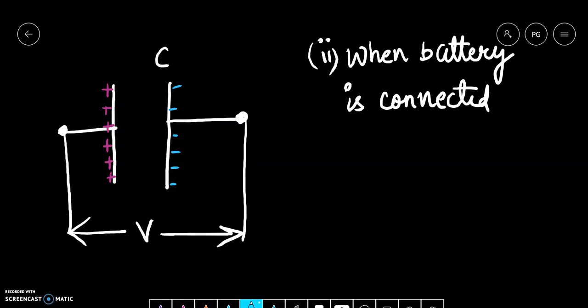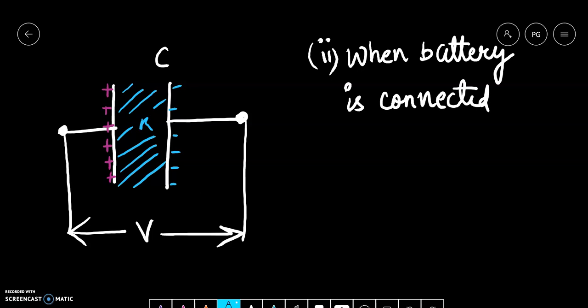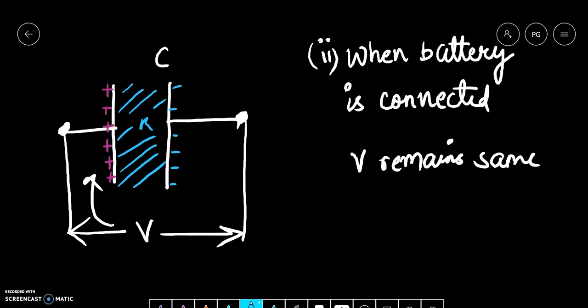In Case 2, when the battery is connected and I introduce a dielectric, after its introduction the potential remains the same — because I still have the same battery connected, meaning there will be no change in potential across the terminals. So what will happen? The charge will change — the capacitor is going to extract more charge from the battery. Since the potential is constant in this case, we will use the formula: energy equals half C·V².